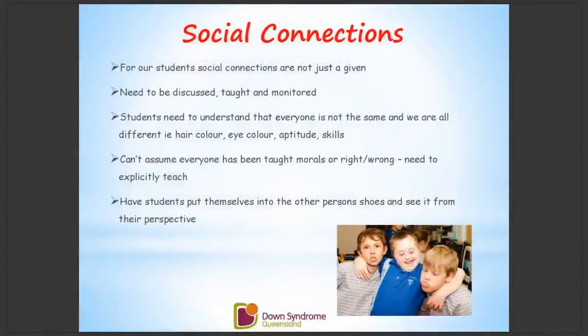For our students, social connections aren't a given — they need to be helped, discussed, and explicitly taught. That's where social stories come in. They need to be taught what's right and wrong behaviour. Students with an intellectual impairment can mimic those around them, so if they're not making good peer choices, they may make bad behaviour choices. We need to help them have positive social interactions so they can build strong friendships. I know several teenagers still friends with their prep friends because those relationships were cultivated and explicitly taught so early on.